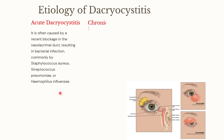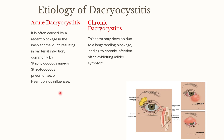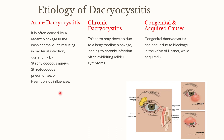Chronic Dacryocystitis may be due to long-standing blockage, which can lead to chronic infection with less pronounced symptoms. Congenital Dacryocystitis is often due to a blockage in the valve of Hasner, located in the distal portion of the nasolacrimal duct. This can lead to neonatal Dacryocystitis if amniotic fluid is not expelled from the nasolacrimal system shortly after birth.